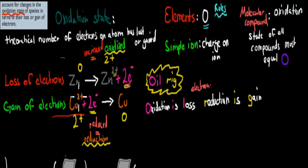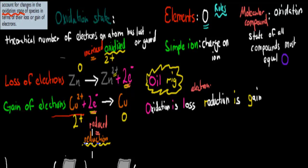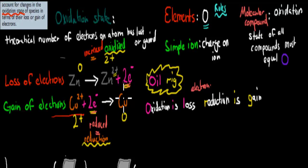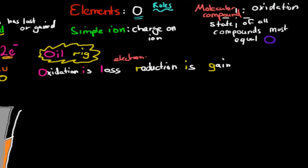Reduction is gain. Copper has gone from +2 to zero and gained two electrons, so reduction is gain. That's just a different way to memorize the same concept. But you really need to know those terms: reduction and oxidation. That was for simple ions and elements — but we can still get a question that talks about molecular compounds.